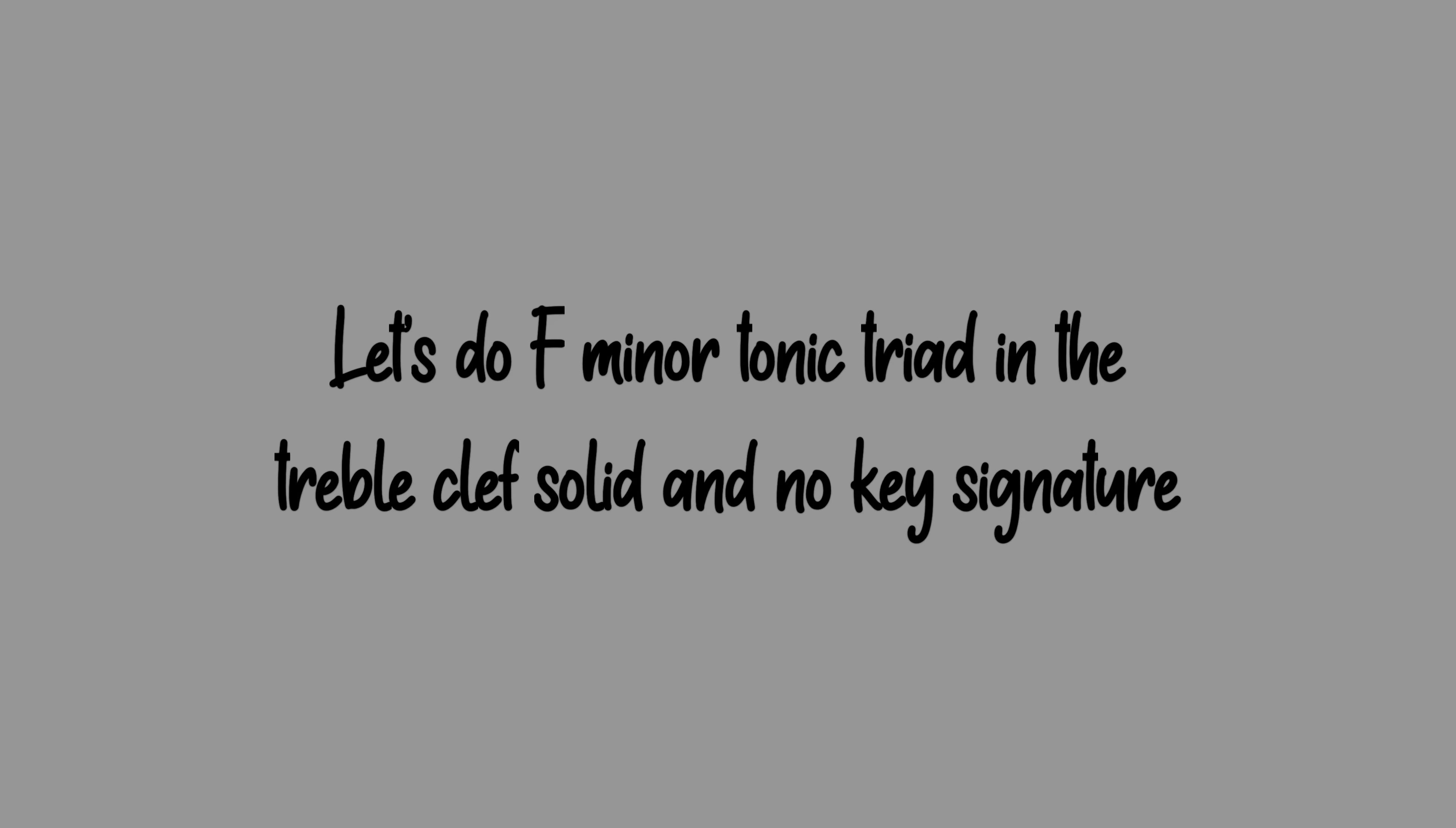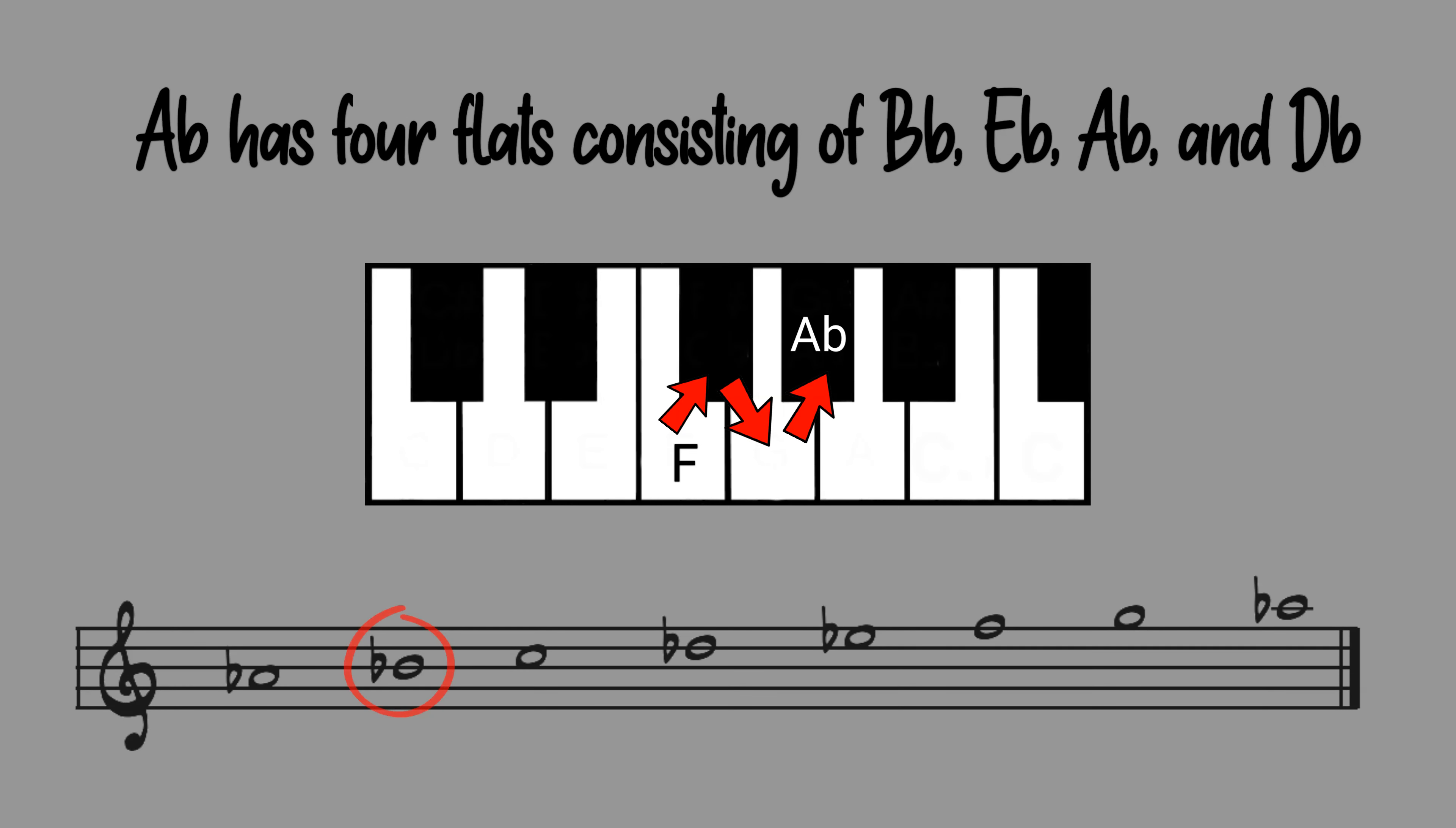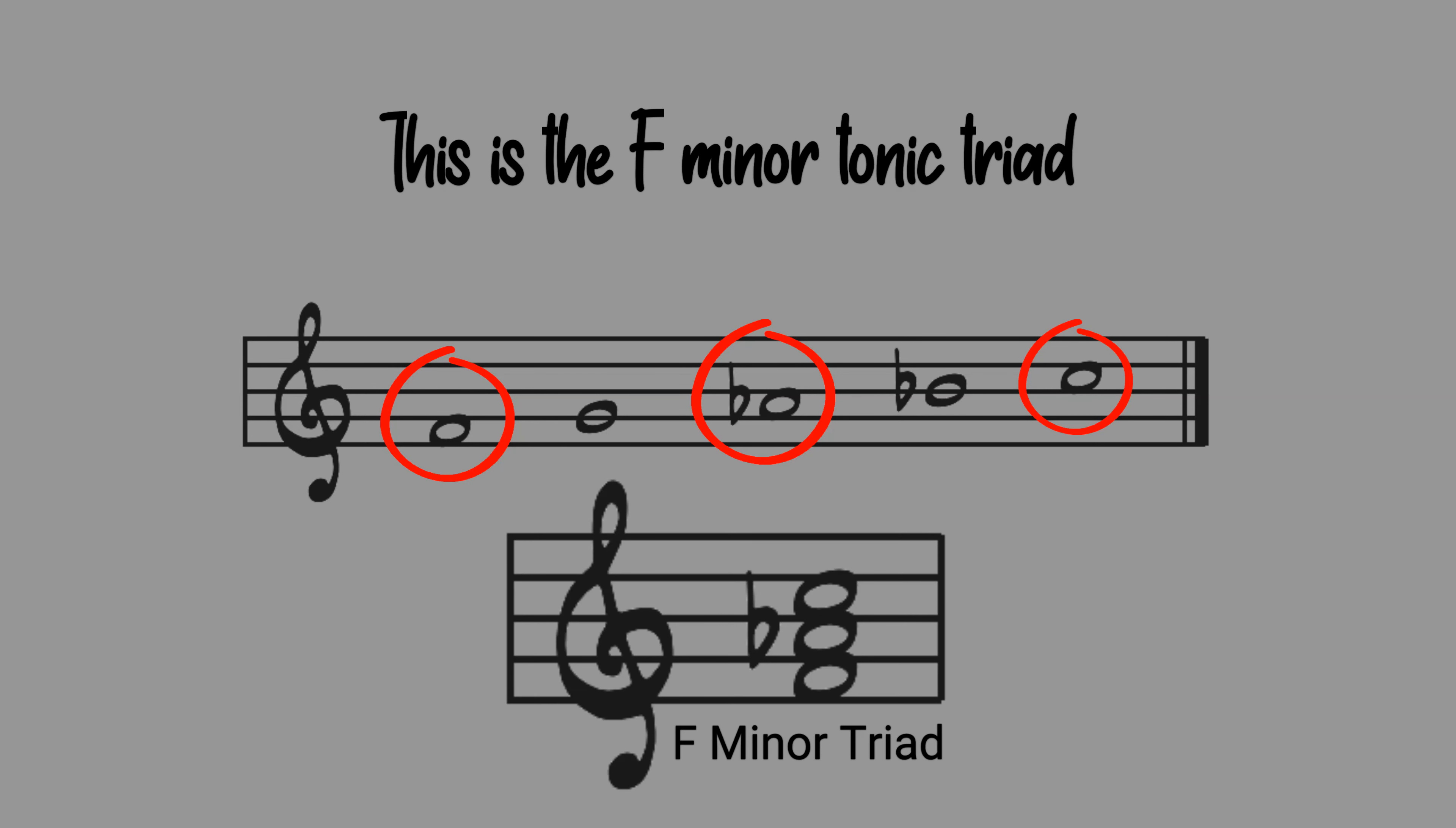Let's do an F minor tonic triad in a treble clef solid and no key signature. The relative major of F is A flat. A flat has four flats consisting of B flat, E flat, A flat and D flat. This is the first five notes of the F minor scale. The tonic is F, third is A flat and the fifth is C. This is the F minor tonic triad.